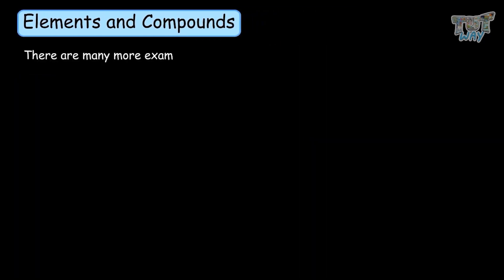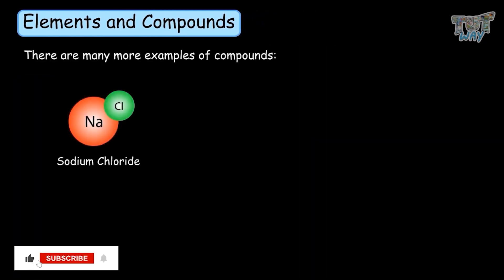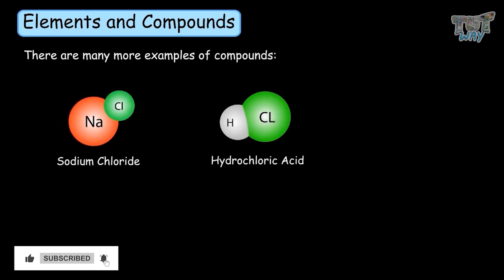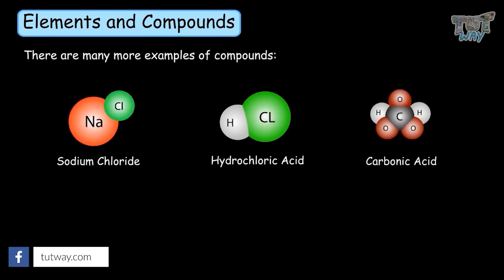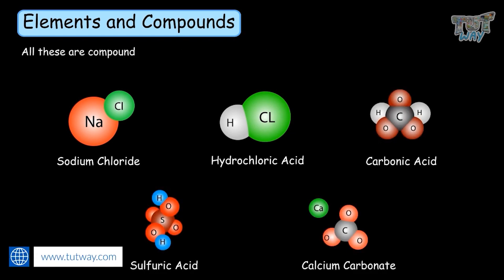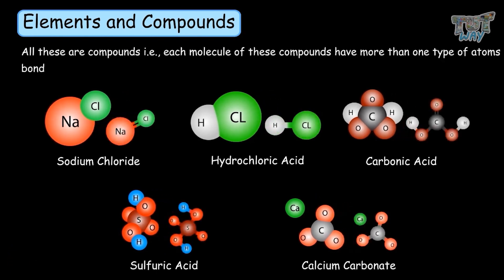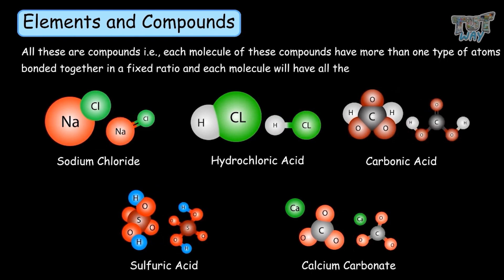There are many more examples of compounds: sodium chloride, hydrochloric acid, carbonic acid, sulfuric acid, calcium carbonate — all of these are compounds. Each molecule of these compounds has more than one type of atom bonded together in a fixed ratio, and each molecule will have the same properties of that compound.